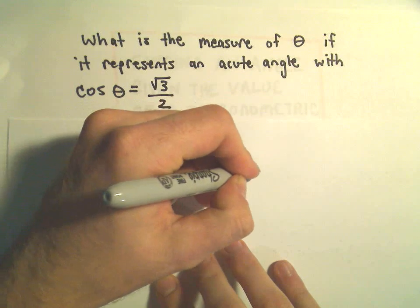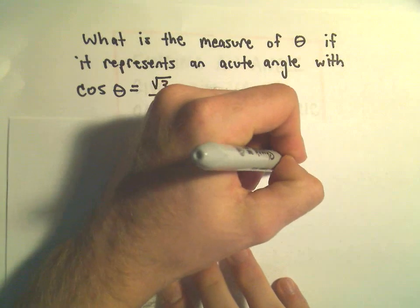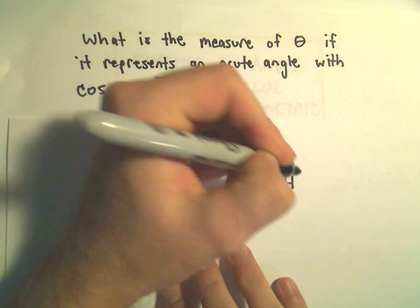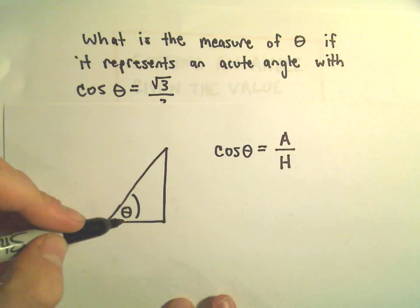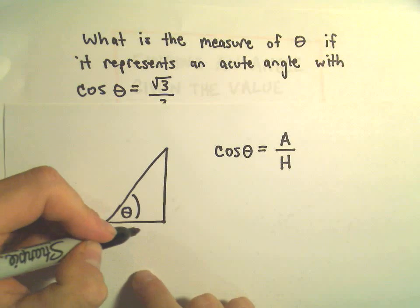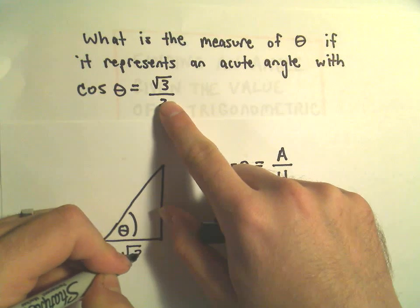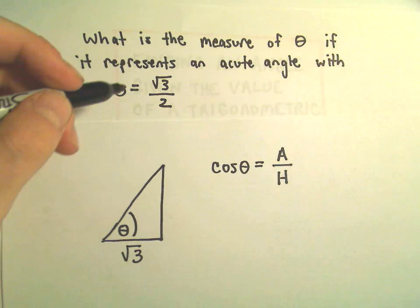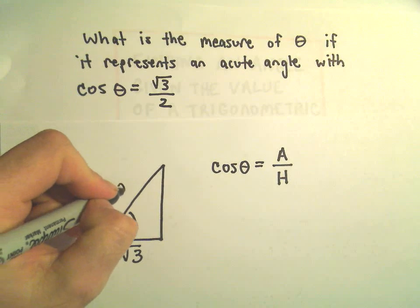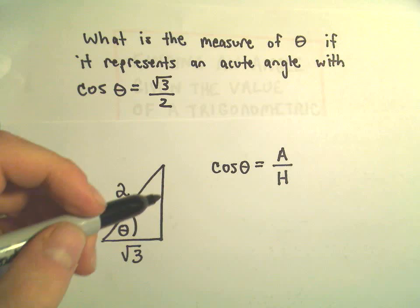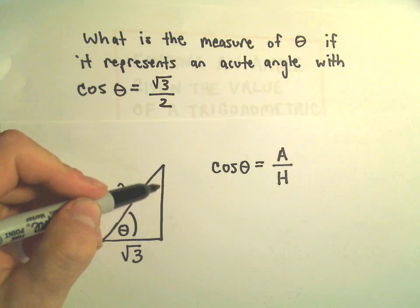So remember cosine of an angle is defined to be the adjacent side over the hypotenuse. And again, for our angle theta, this would be the adjacent, so I'm simply going to label the adjacent side as square root of 3. I'm going to label the hypotenuse here with length 2. And now we would have to figure out this missing side.